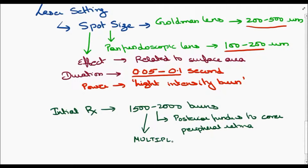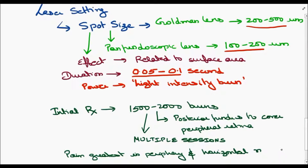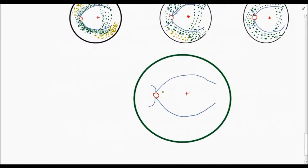Multiple sittings are recommended to prevent pain and other complications associated with PRP. Pain is greatest in the periphery and the horizontal neurovascular bundles, least along the posterior.